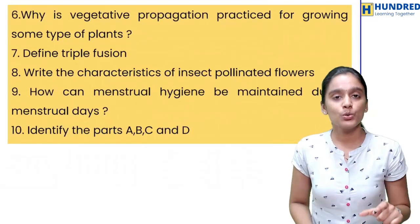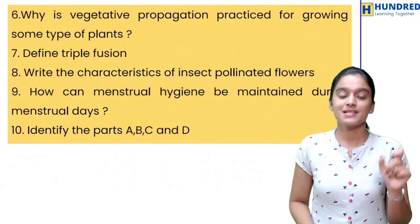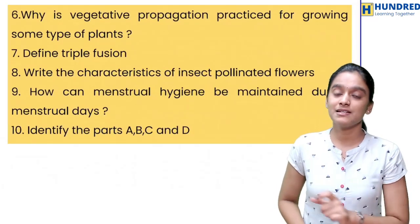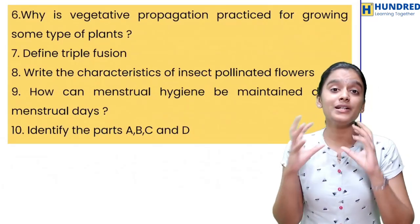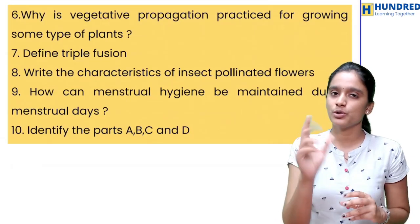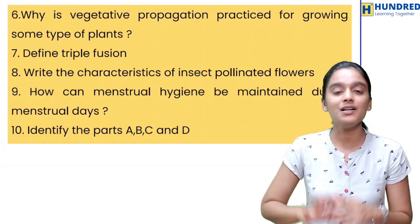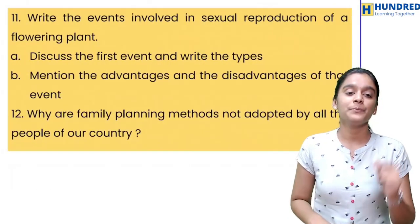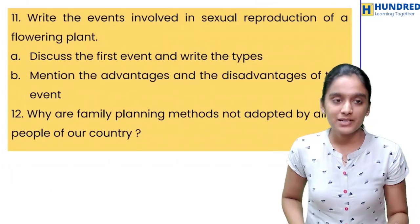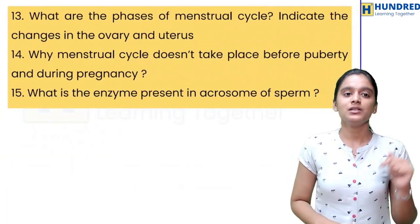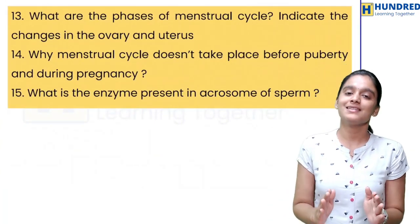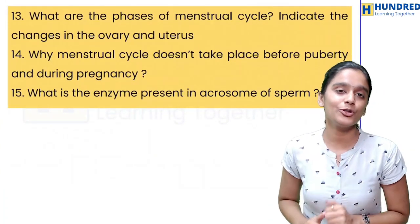Along with these 5 questions, identify the parts A, B, C, and D. You will learn more about pollen and grains. Questions 11, 12, 13, 14, 15 — you will learn more about these 15 questions in this chapter.